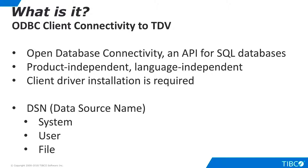User and system DSNs are specific to a particular computer and store DSN information in the registry. A user DSN allows database access for a single user on a single computer, and a system DSN allows access for any user of a particular computer. A file DSN contains the relevant information within a text file with a .DSN file extension, and can be shared by users of different computers who have the same drivers installed. For most purposes, TIBCO recommends the use of system DSNs, as they are more flexible to administer and use.